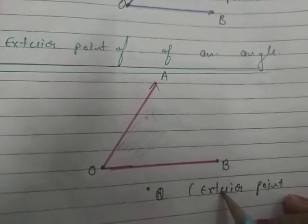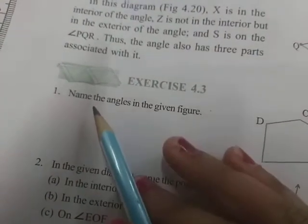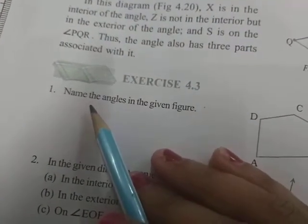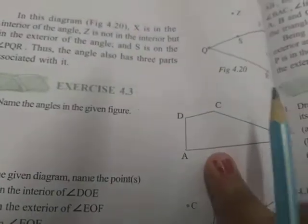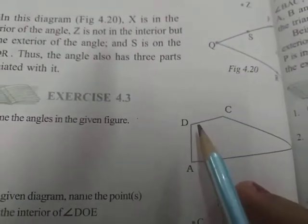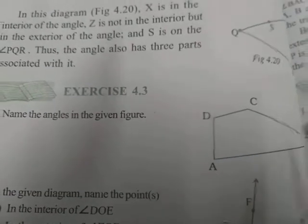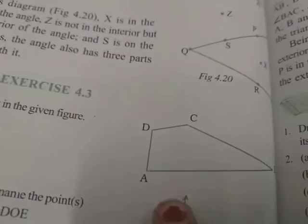Now we can discuss the questions. Question number one: Name the angles given in the figure. Looking at the picture, we have a closed shape A, B, C, D which is made up of four line segments and has four vertices — point A, point B, point C, and point D.